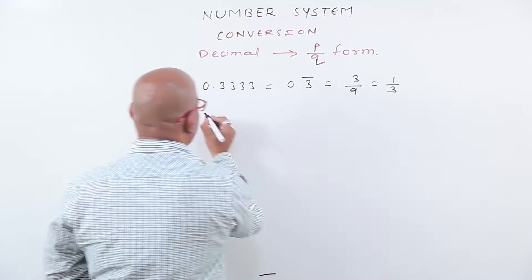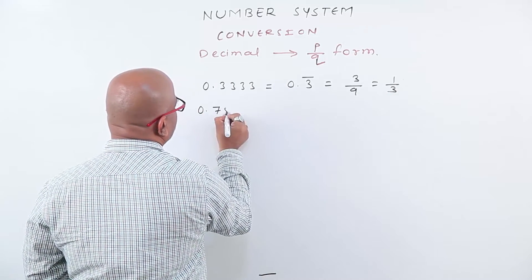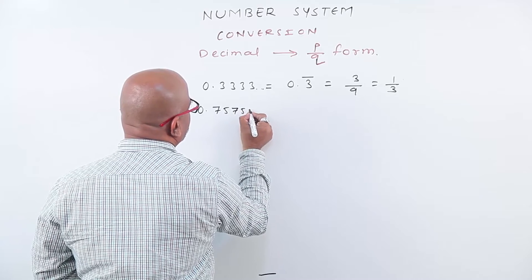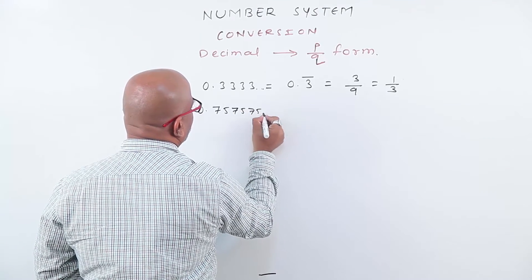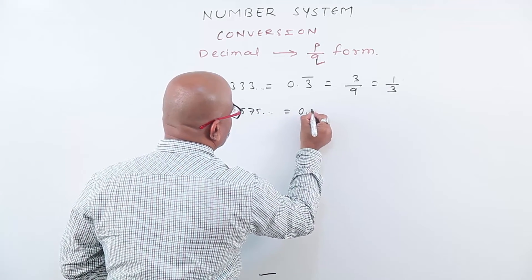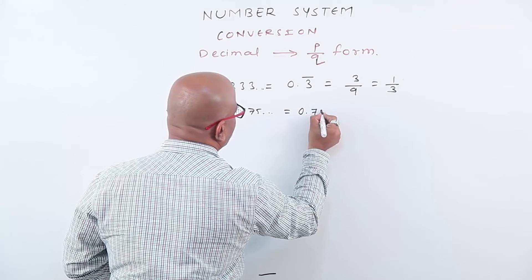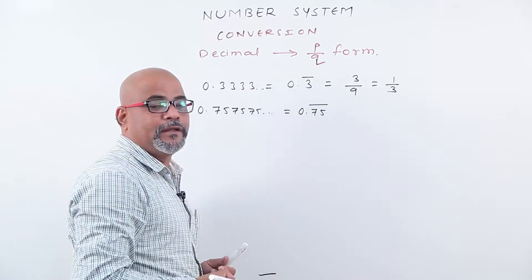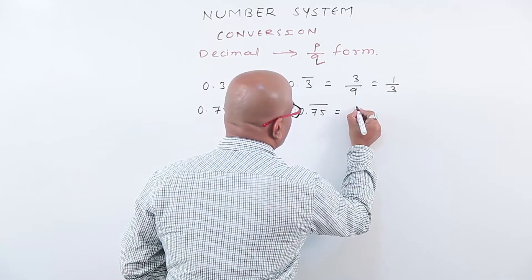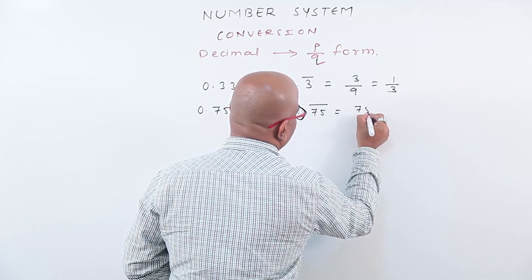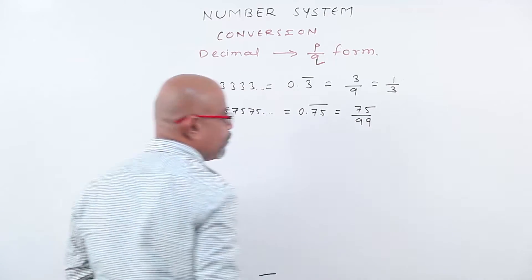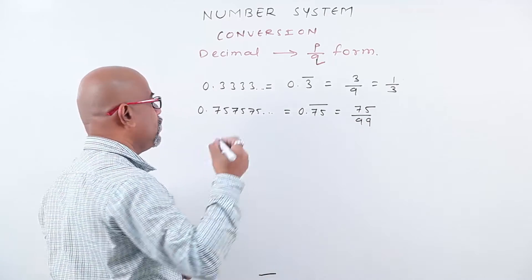Our second example: 0.75, 75, 75, 75 and so on. Since here two numbers are recurring, we write in reduced form 0.75 bar. That is two numbers are recurring, so we write 75 by 99. This is of the form p by q.